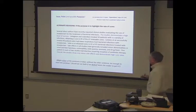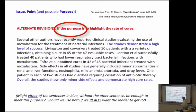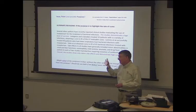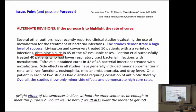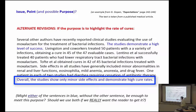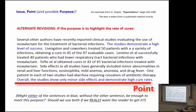Part of what I want you thinking about is how else might you revise it. All these paragraphs are fine, depending upon what you want to get across. If the purpose is to highlight the high rate of cures, you want that to be your issue and your point. So I've modified the paragraph: 'The studies demonstrate a high level of success.' Then we talk about success, and success, and success. We've said high rate of success. Then we get to side effects — that's important too. But then we get to 'overall, the studies show only minor side effects and demonstrate high cure rates.' There's our backward link, and high cure rates as the point — making it hard for a reader to miss.